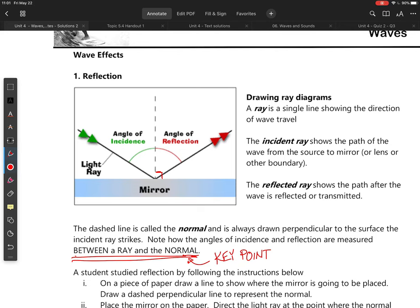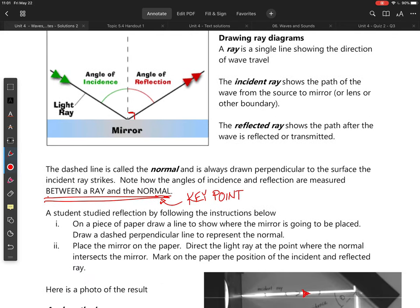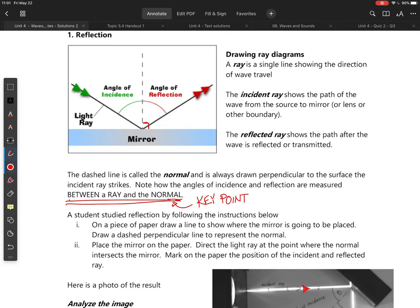We always measure our angles of incidence and reflection and refraction against what is called the normal line. What is the normal line? It's just a line that is drawn perpendicular to the surface that you are either bouncing light off of in the case of reflection or the surface between two mediums in the case of refraction. But this is really important. Knowledge of your normal line is key.